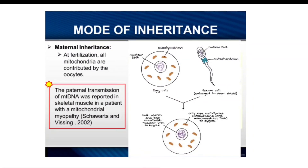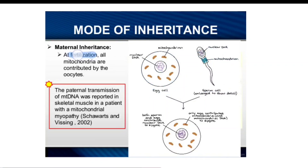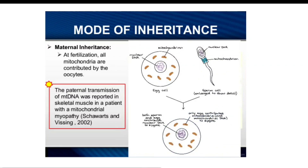Regarding the mode of mitochondrial DNA inheritance: the egg cell and sperm cell fuse during fertilization. In the sperm, mitochondria are in the neck region and nuclear DNA is in the head. All mitochondria are contributed by the oocyte (egg). Both sperm and egg contribute nuclear DNA to the zygote, but only the egg contributes mitochondria and mitochondrial DNA to the zygote.